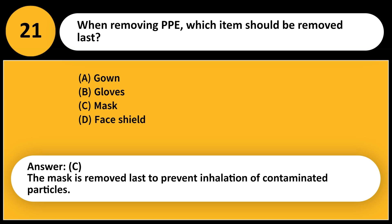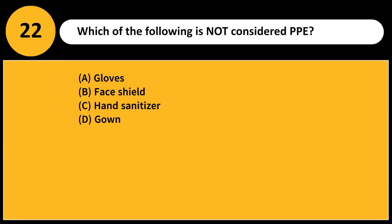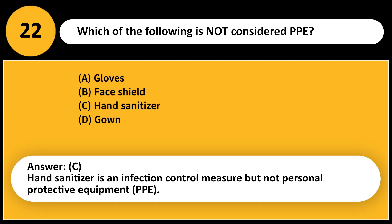Which of the following is not considered PPE? A. Gloves. B. Face shield. C. Hand sanitizer. D. Gown. Answer: C. Hand sanitizer is an infection control measure but not personal protective equipment (PPE).